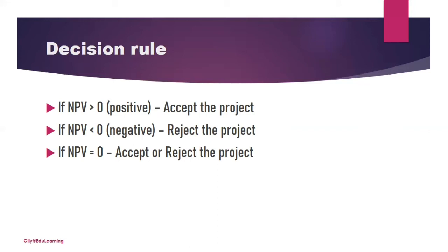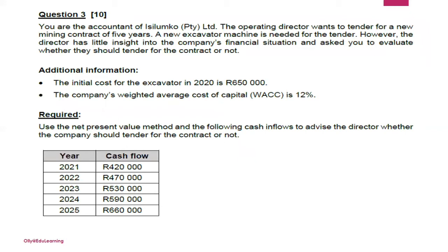Now let's look at the question, taken from a Southern Business School past question paper. You are the accountant of Isolunku Pty Ltd. The operating director wants to tender for a new mining contract of five years. A new excavator machine is needed for the tender, but the director has little financial insight and has asked you to evaluate whether they should tender for the contract. The initial cost of the excavator in 2020 is R650,000, and the company's weighted average cost of capital is 12 percent.